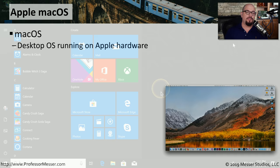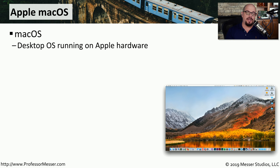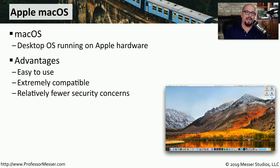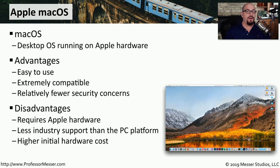Another popular operating system is Apple's Mac OS, primarily designed as a desktop operating system to run on Apple hardware. Mac OS is designed for ease of use, and because you're running on Apple's hardware, you know that the operating system and hardware will be extremely compatible with each other. This also means you have less industry support for applications compared to something like Microsoft Windows. With Mac OS, the only hardware options you have are those available from Apple, so your initial hardware cost may be a little more than if you were to build the system yourself.